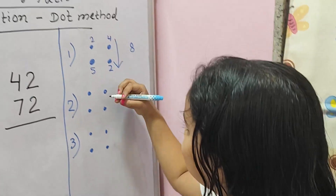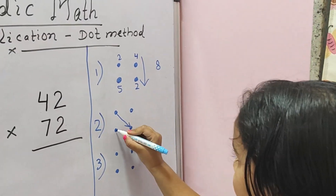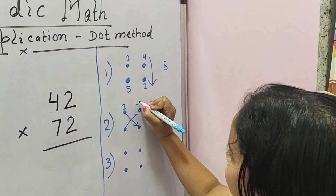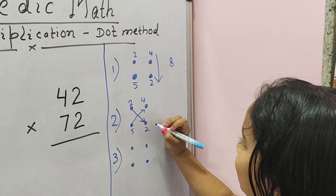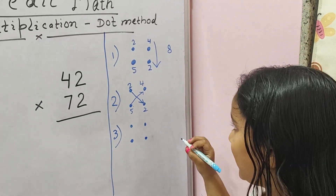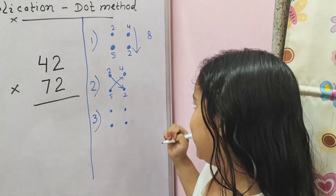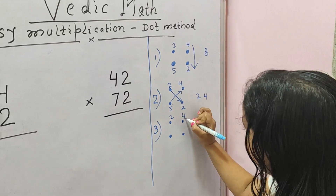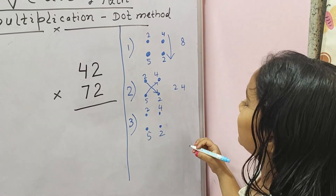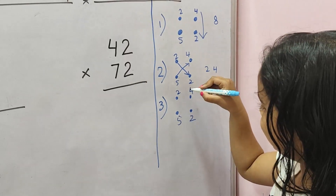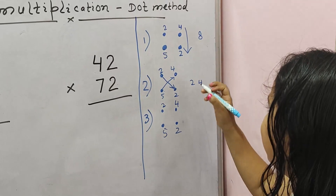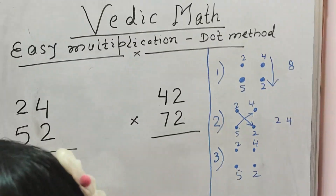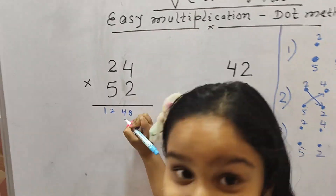The second step is we have to multiply cross. So we write 24 and 52 again. 2 times 4 plus 5 times 4 gives us 20, and 20 plus 4 is 24. So carry forward 2. Third step: we write 24 and 52 again. We do a standing line from the left side — 2 times 5 is 10, plus the carry forward 2 is 12. So the answer is 1248.